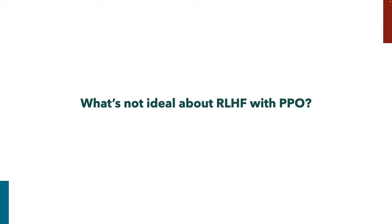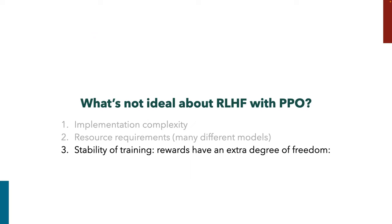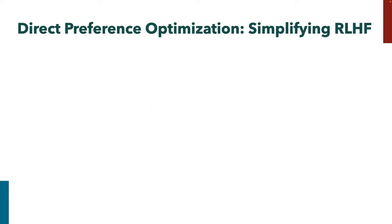What's not ideal about RLHF with PPO? There's implementation complexity, resource requirements — we have all these different models: the reward model, value model, policy, reference model — and instability of training. The rewards also have an extra degree of freedom: the loss function only cares about differences between rewards, so you can shift rewards for a particular prompt by an arbitrary constant without changing the loss, and that constant can be different for every prompt, making it really difficult to fit a value function when doing RL.